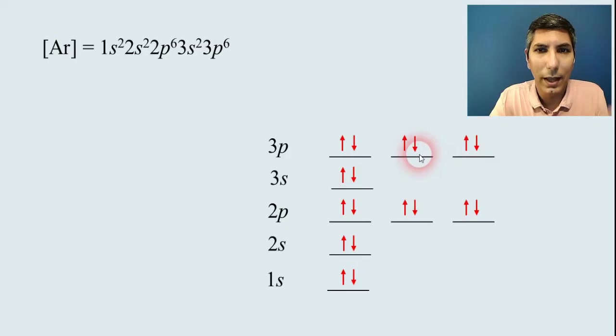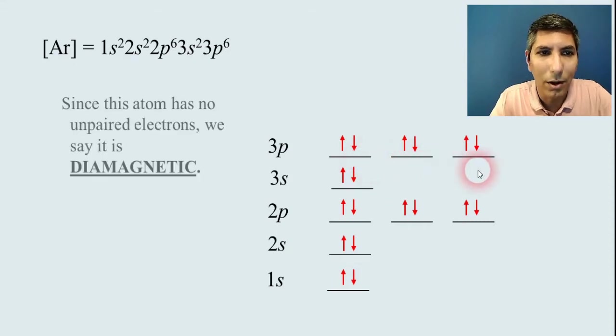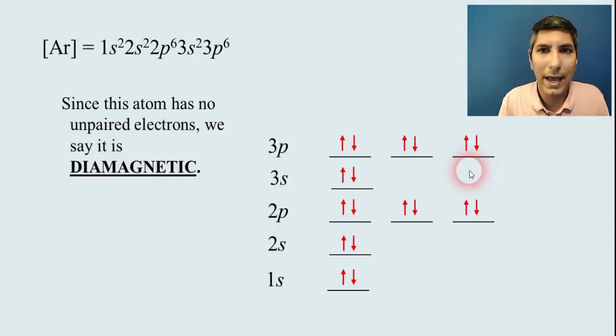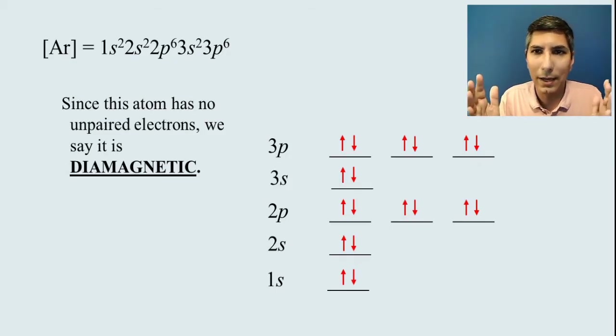2p⁶, 3s², and 3p⁶. So that fills everything up. Once you notice that in argon, all of the electrons—and each electron is represented by an arrow—all the electrons are paired up. None of them are just unpaired like we had in the last example. When you have this, this is called diamagnetic. So if an atom doesn't have any unpaired electrons, we say it's diamagnetic. So there's paramagnetic and there's diamagnetic.